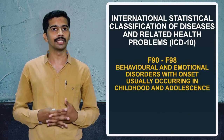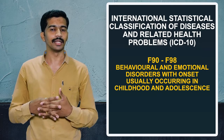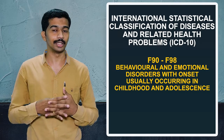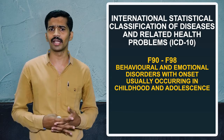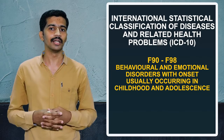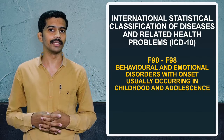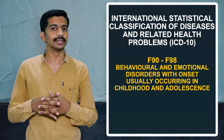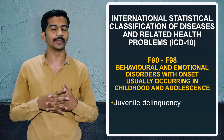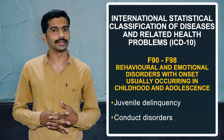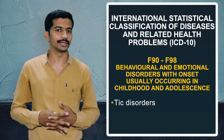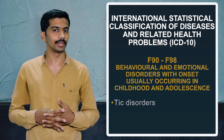The next chapter, F90 to F98, includes emotional and behavioral disorders mainly seen in the adolescent and childhood period. Here it covers juvenile delinquency, conduct disorders, and tic disorders.